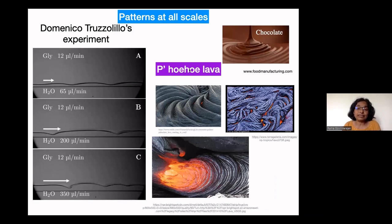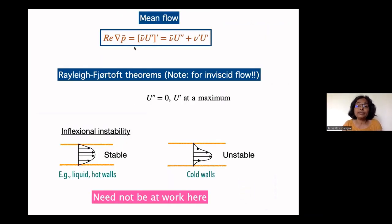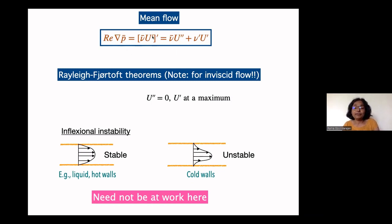There are instability patterns at all scales in flows like this — very large scales in lava, enormously complicated patterns in chocolate. But what we're going to talk about today is an experiment performed by Domenico Truzzolillo's group in a micro channel. Whenever you have a viscosity variation, the usual parabolic velocity profile is modified by the mean viscosity variation term, and because of this we can get all kinds of profiles with inflection points.